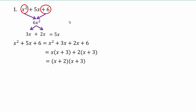One thing to notice: if the leading coefficient is 1, you'll start to see a pattern — 1 times 6 is 6 and 2 plus 3 is 5, giving x plus 2 times x plus 3. These two numbers multiply to give 6 and add to give 5. But until you're comfortable, make sure you go through all the steps of factor by grouping. Remember, this pattern only works if the coefficient is 1.